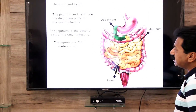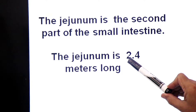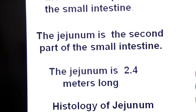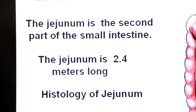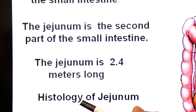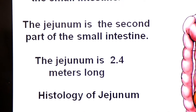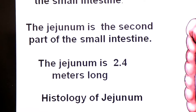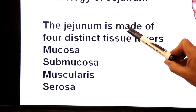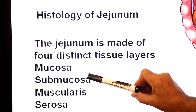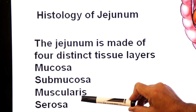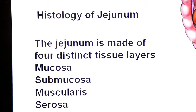The jejunum is about 2.4 meters long. Histology is the study of tissues. The jejunum is made of four distinct tissue layers: mucosa, submucosa, muscularis, and serosa. These are the four layers found in the wall of the jejunum.